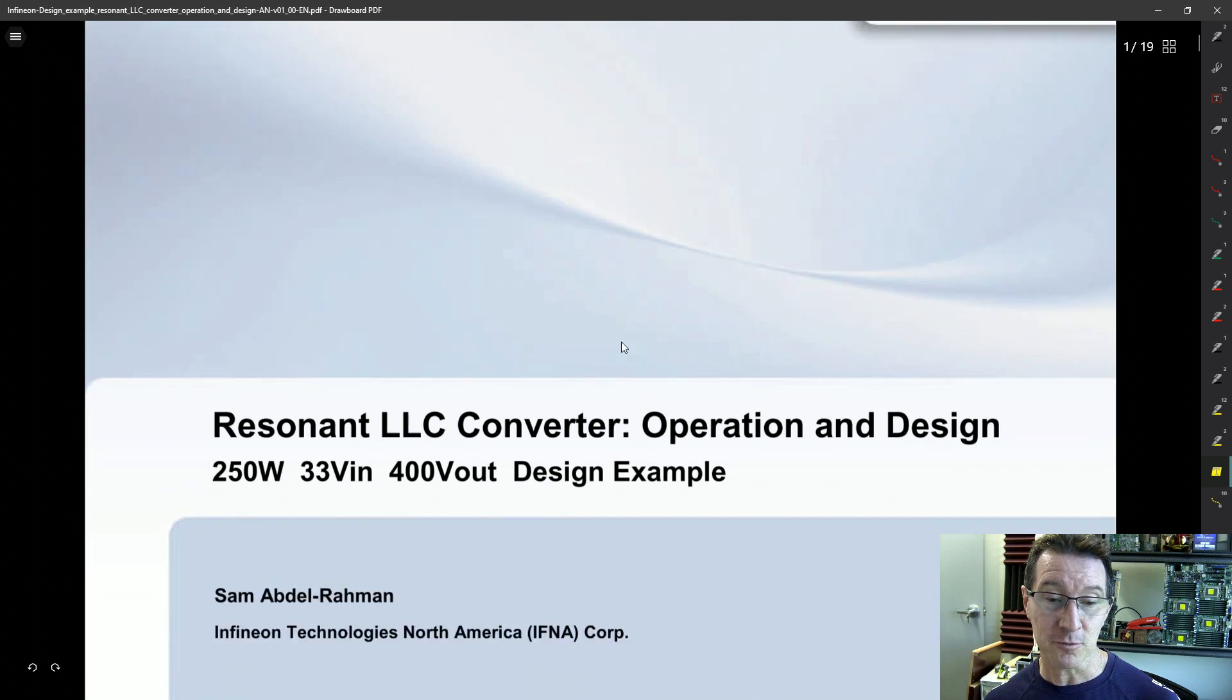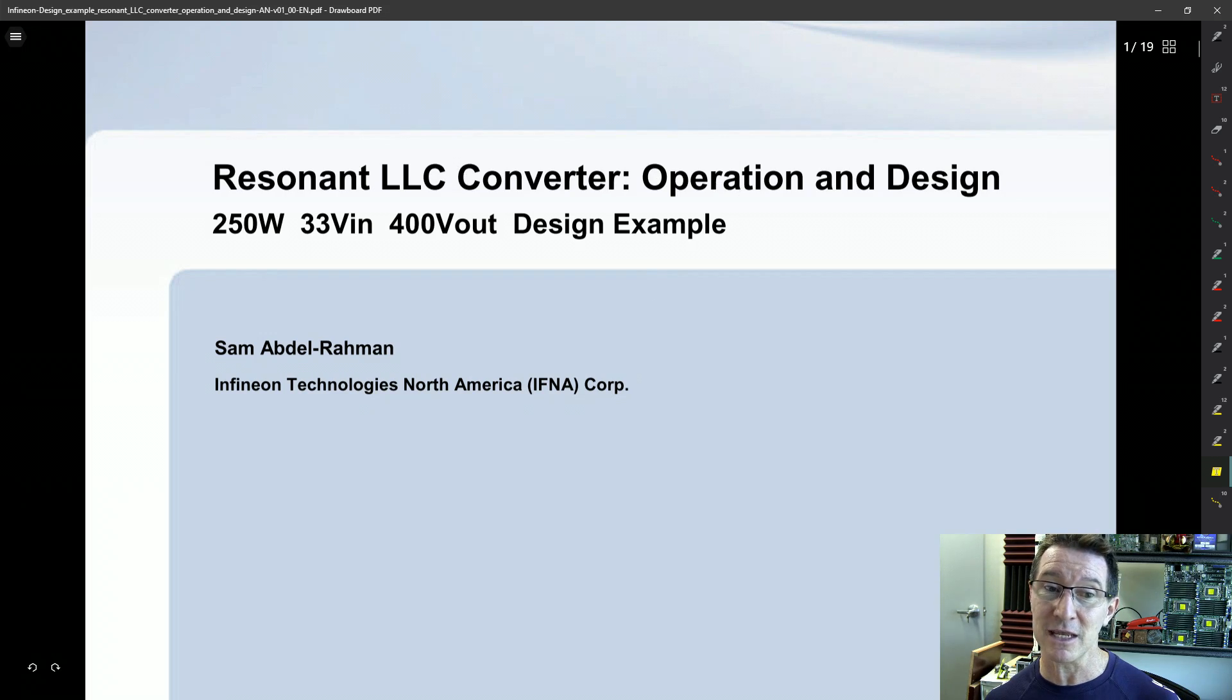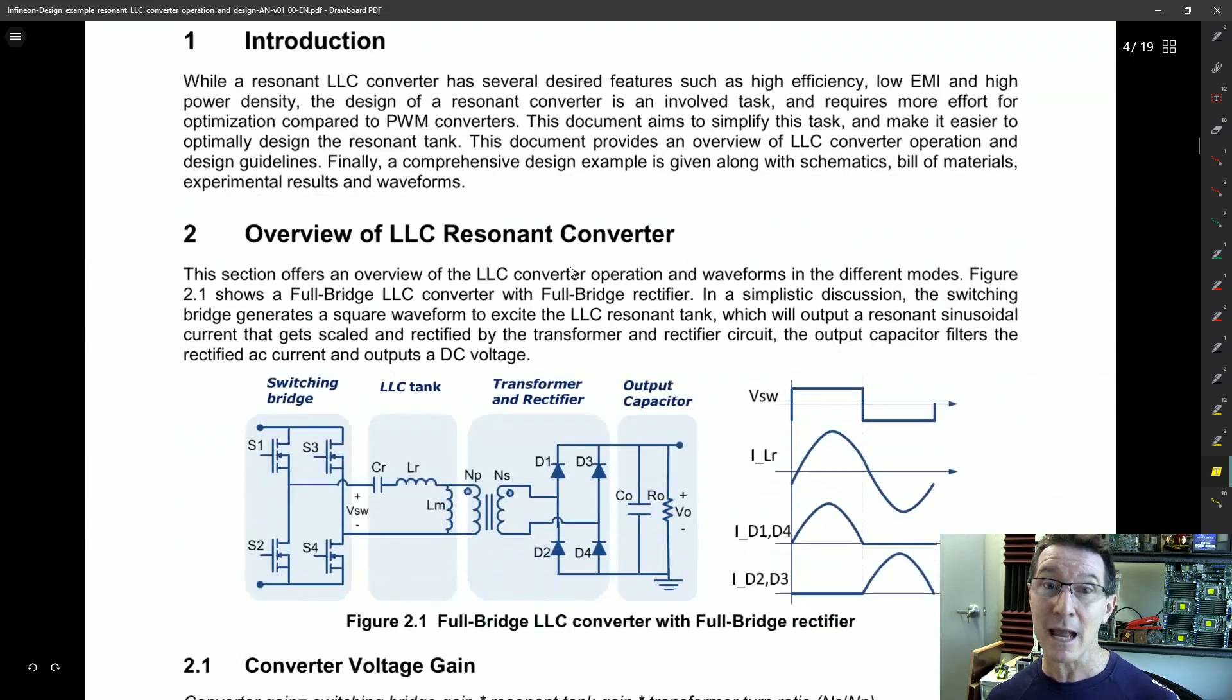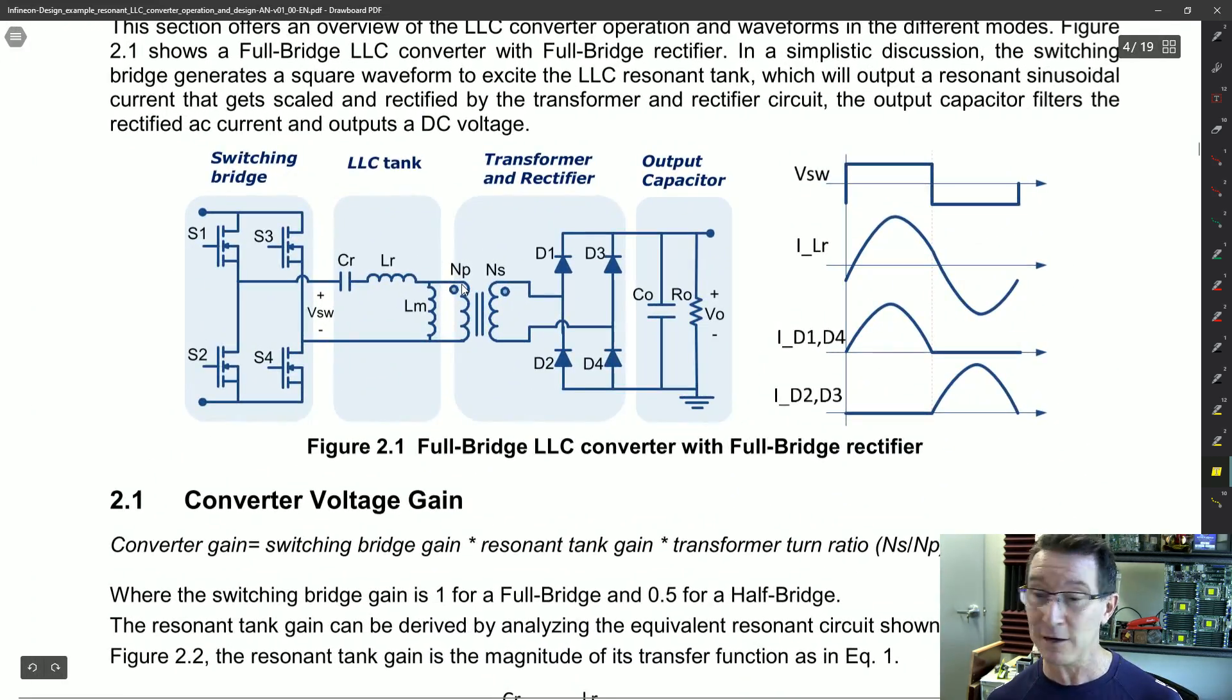I found this application note from Infineon. I'll link it down below. Resonant LLC converter operation and design. And it has a good generic application circuit here. And I believe this is pretty much what we're seeing here. This is why it's a full bridge. Now, you can actually get a half bridge resonant converter as well. And they're very common, which, of course, will only have if you're aware of your full bridge, your H bridge. You can get a half bridge would only have the two MOSFETs and would only have the two output diodes. But in this case, we do have physically four MOSFETs and four diodes on those heatsinks. So this is what's going on here.